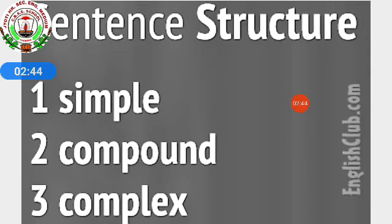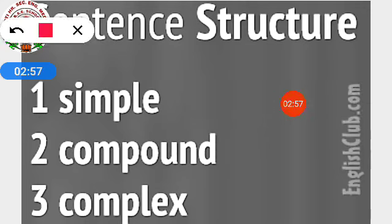So today we will continue with the structure of the sentence. Sentences can also be classified into Simple, Compound and Complex sentences on the basis of their structure. On the basis of structure, sentences can be classified into three parts: Simple sentences, Compound sentences and Complex sentences.